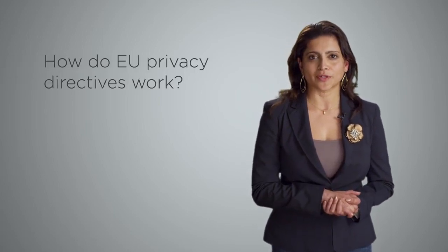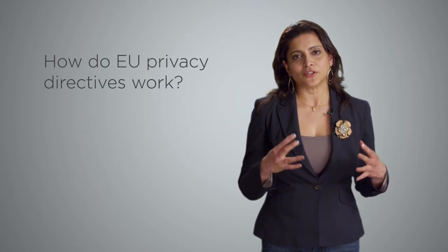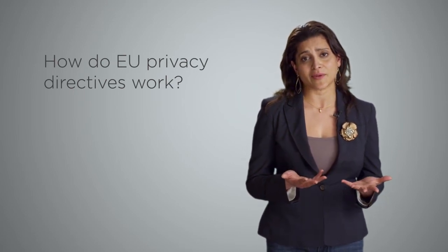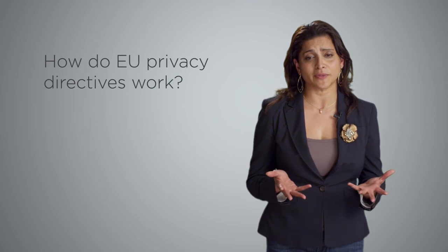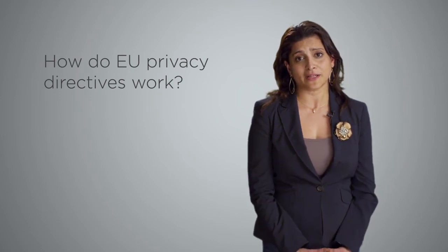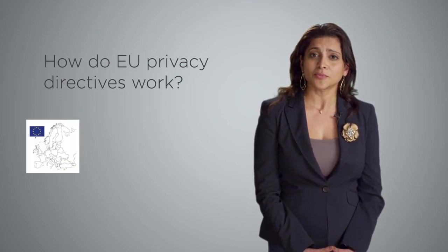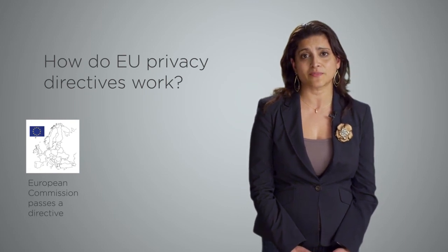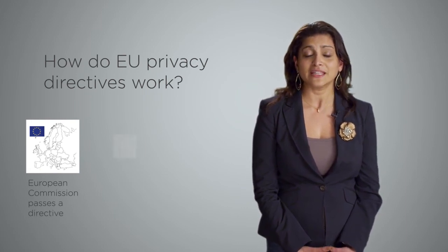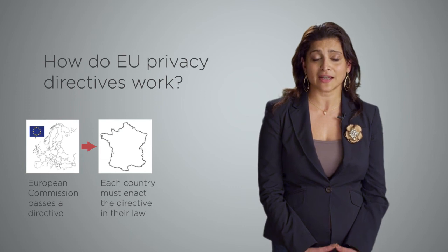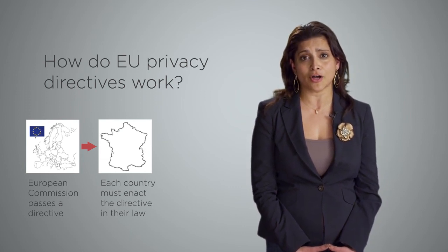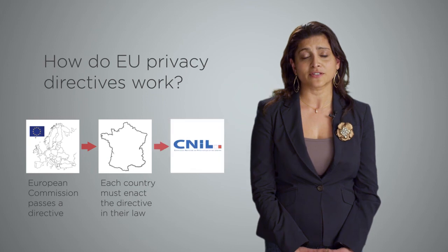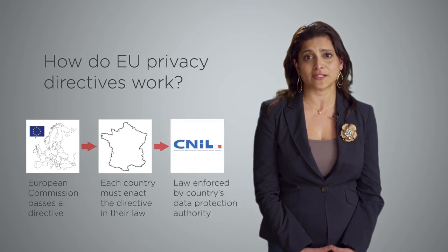Both the 1995 Data Protection Law and the ePrivacy Directive are directives. So what is a directive and how do directives work? The European Union is a federation of 27 member states governed by a European Parliament and advised by a European Commission. The European Commission articulates a directive, which is then passed by the Parliament. Then each member country has to take that directive and enact it into their own national law. After that, the law is enforced by each country's data protection authority.